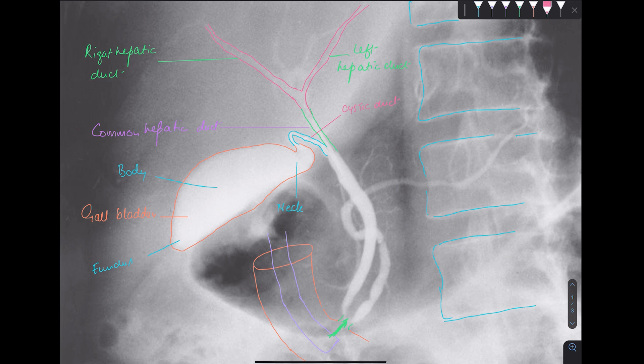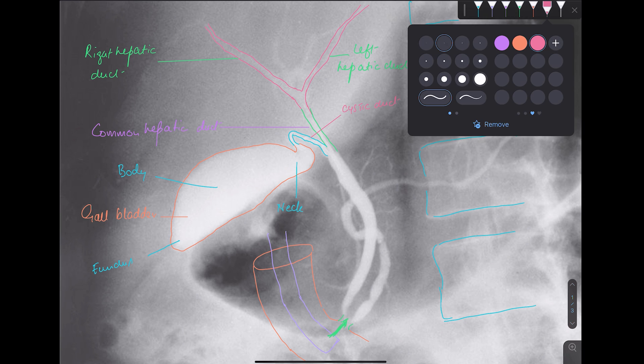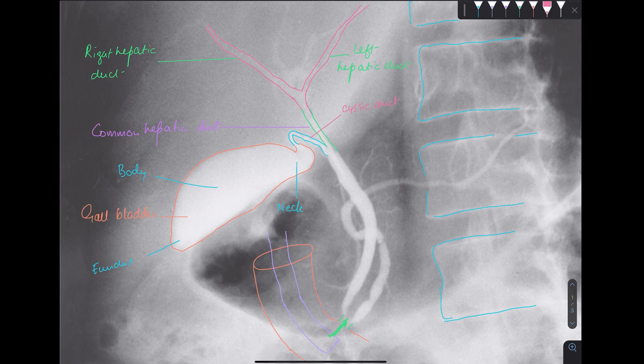And once this cystic duct and common hepatic duct, they join together. Now they are making what? This structure. And that is my, let me draw it completely down. And this is my CBD. What is this CBD? CBD is common bile duct. It is also known as bile duct.